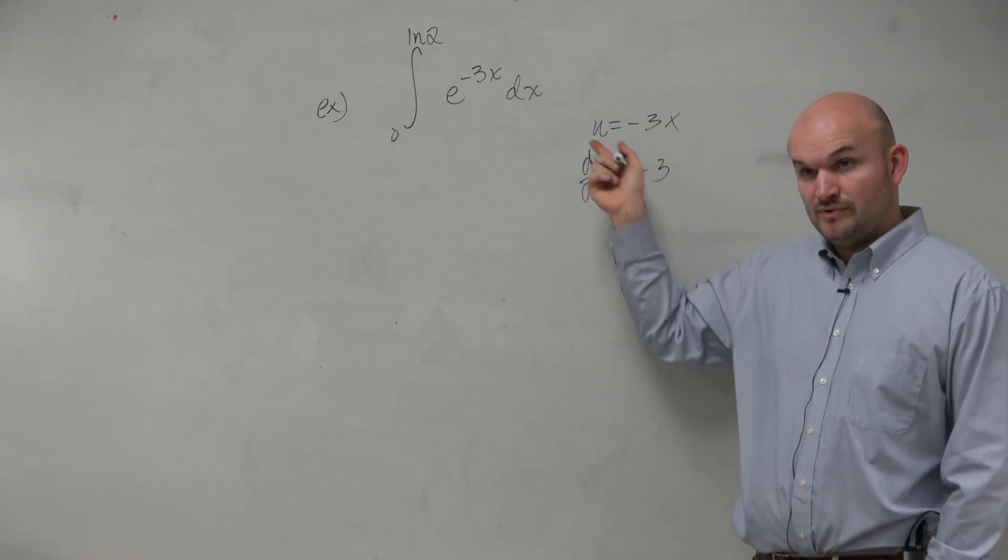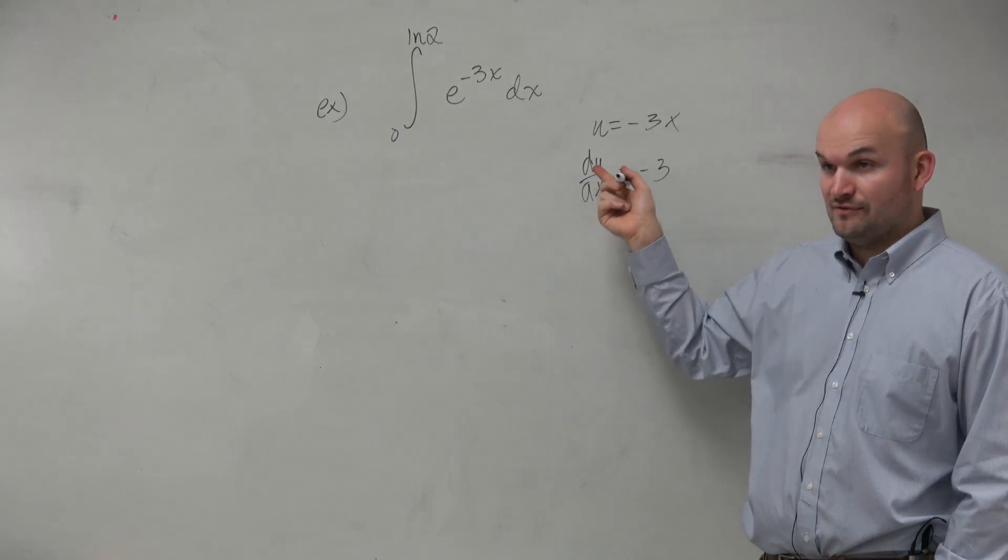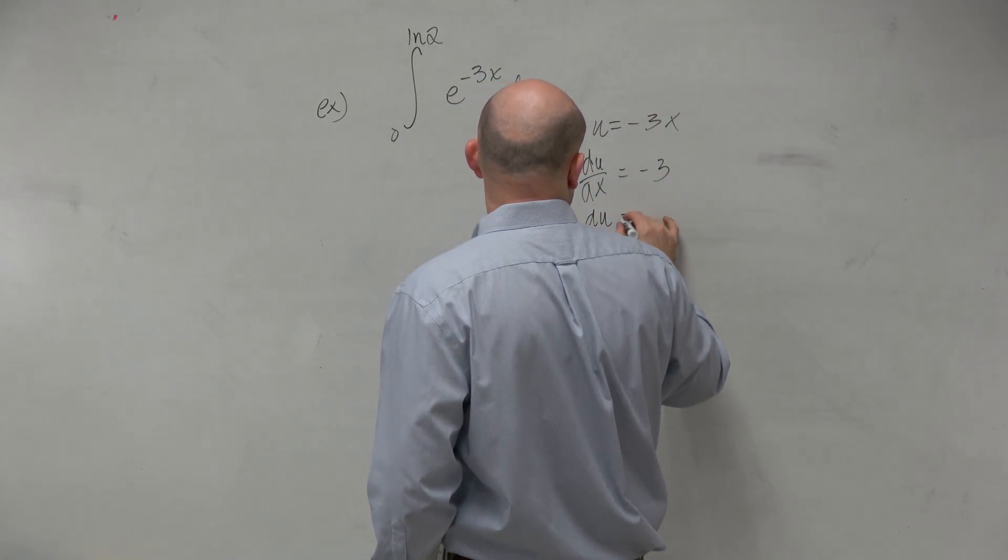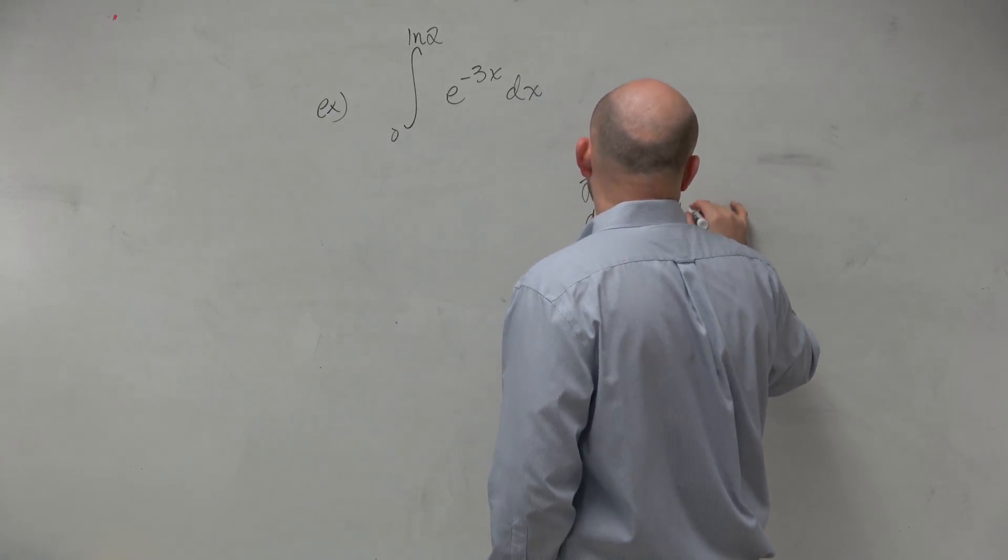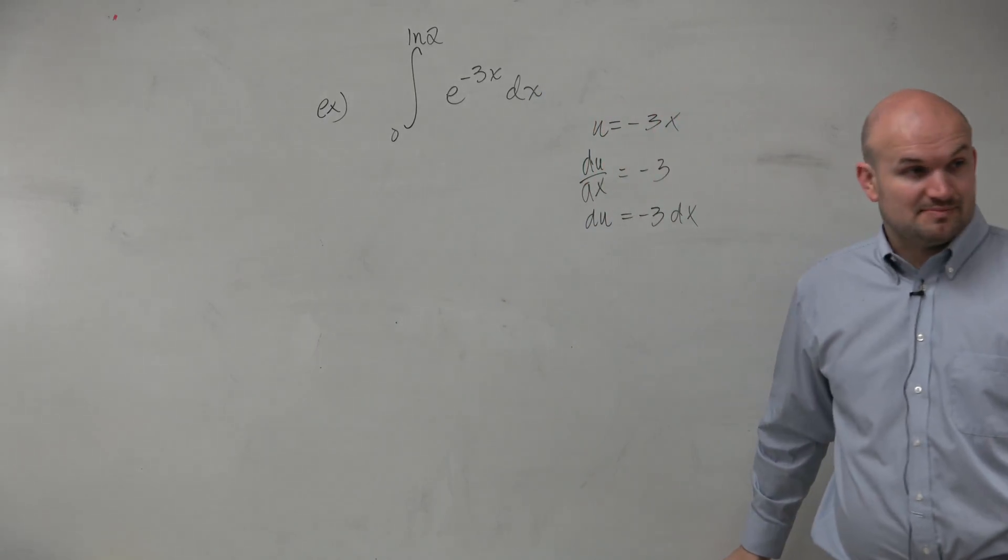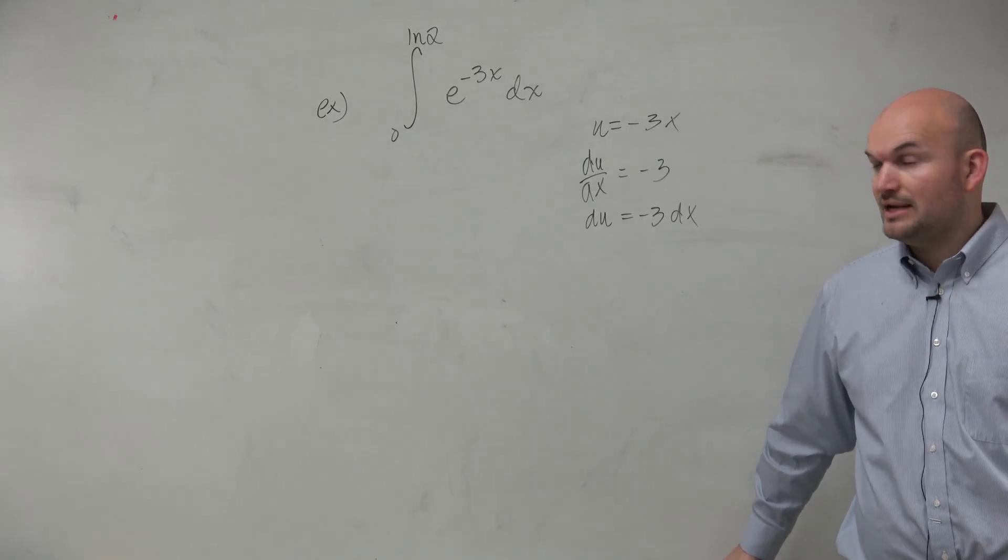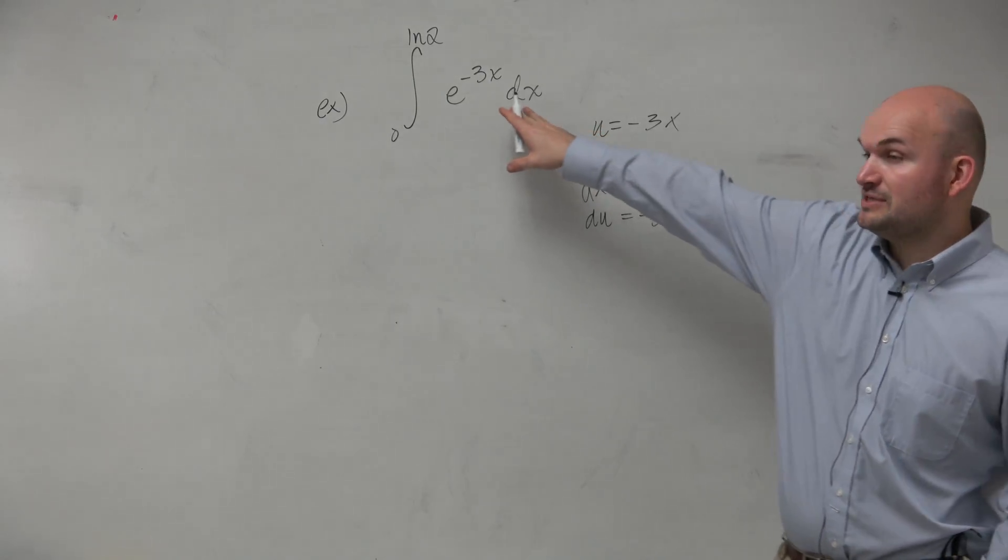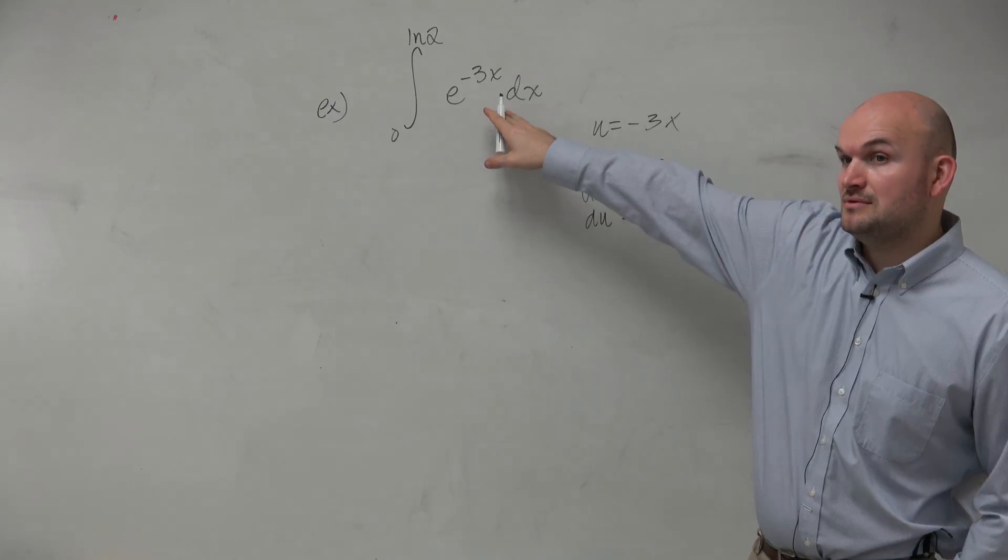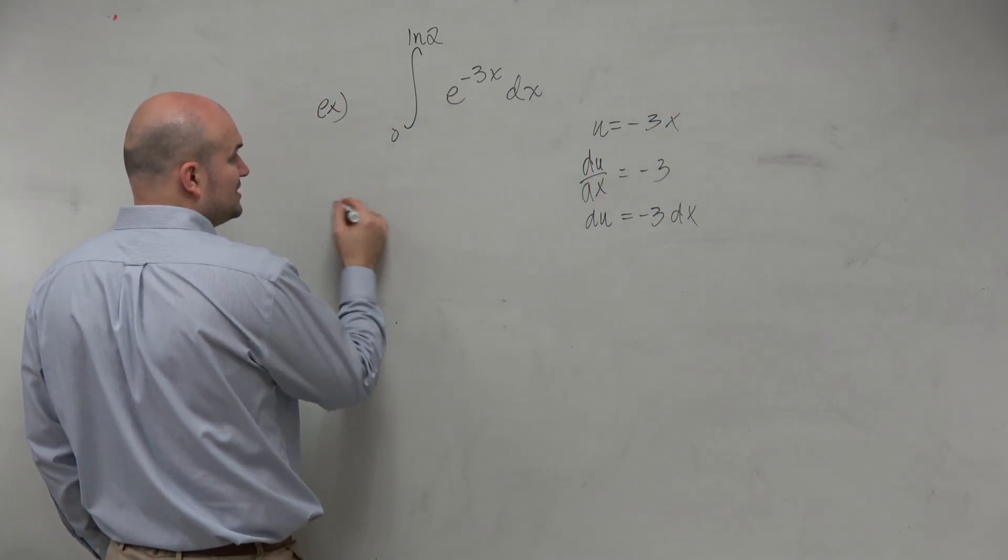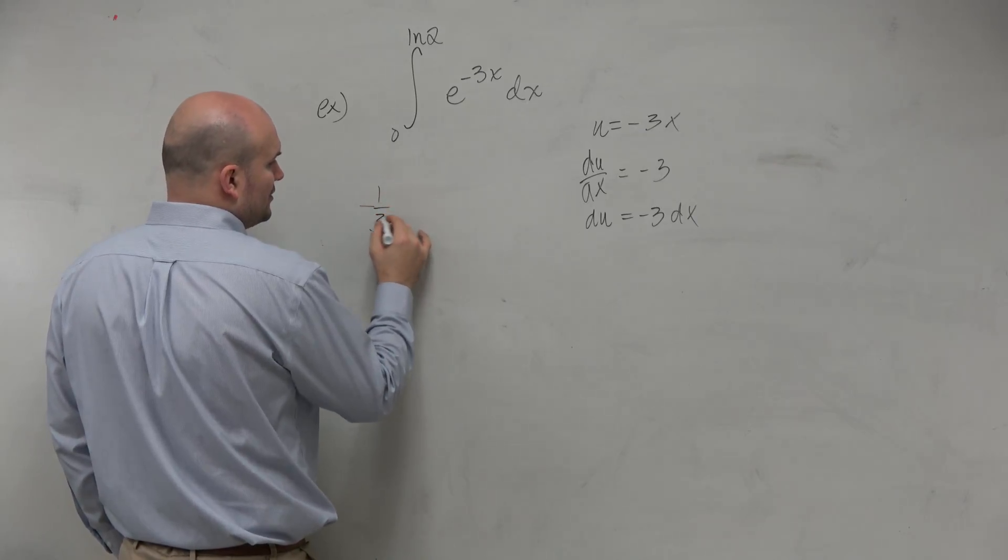And obviously, we know we do not have a negative 3. So basically, du equals negative 3 dx. So I have dx, but I need to compensate for the negative 3, right? I need to compensate for this negative 3, because the negative 3 is not in that problem. So what I'm going to do is throw out a negative 1/3, and I'm just going to take it outside of the integral.